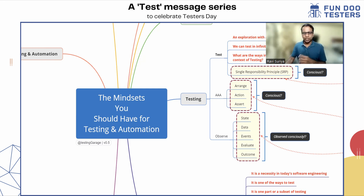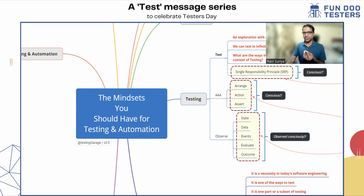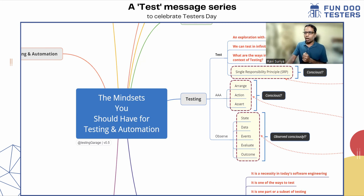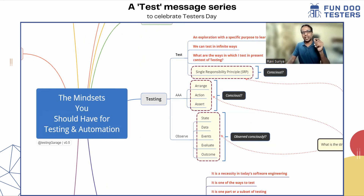Testing involves: configure, operate, observe, evaluate, report — and this goes in a cycle. Similarly: arrange, action, and assert. We do this with data, events, and much more when we test. Now, the question is: are we doing it consciously? Are we associating SRP to the test we do consciously when we test? Am I arranging, doing actions, and asserting consciously when I test?